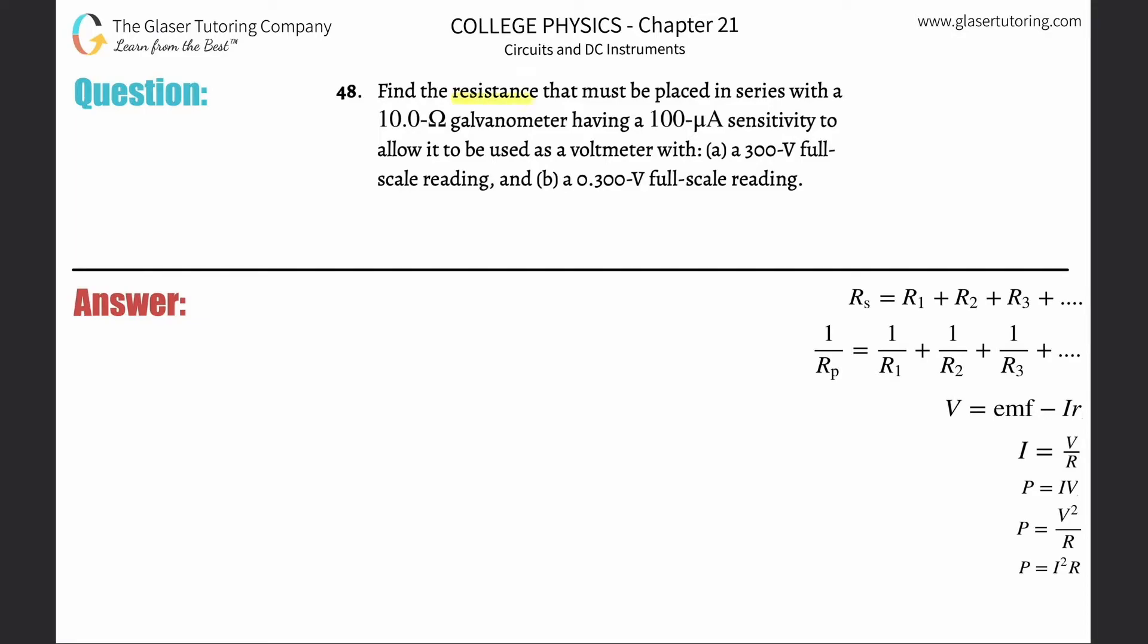Number 48: Find the resistance that must be placed in series with a 10 ohm galvanometer having a 100 microamp sensitivity to allow it to be used as a voltmeter with (a) a 300 volt full scale reading.